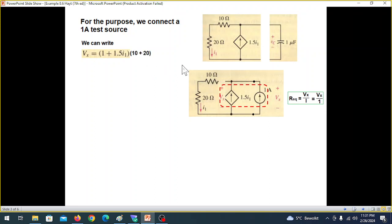this is 1.5 I1, multiplied by the two resistances, that is 10 and 20. Or we can write that Vx is (1 + 1.5 I1) × 30. So let this be our equation number 1. Now from the left branch,